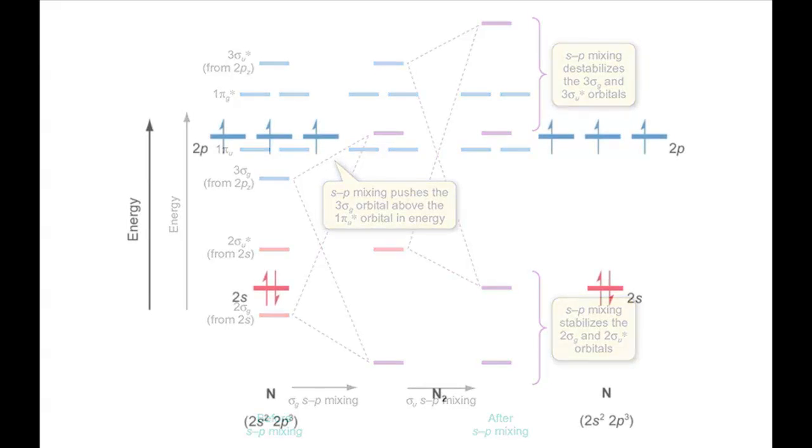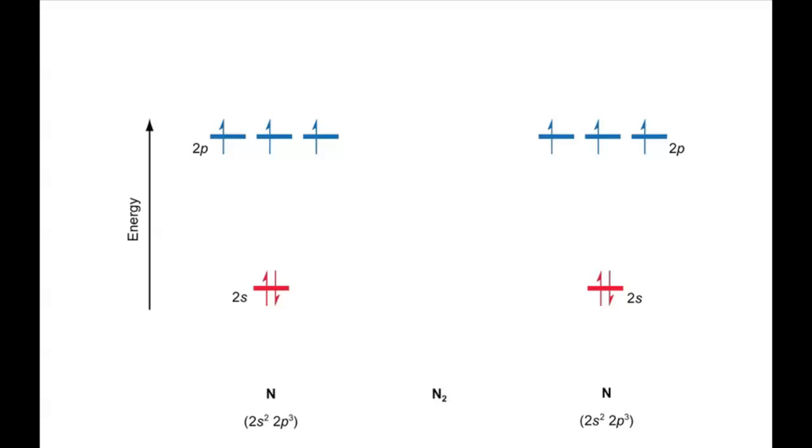In building the molecular orbital energy level diagram for N2, the interactions to form the pi orbitals are similar to those seen in oxygen, since these interactions are not affected by SP mixing. The pi orbitals are the wrong symmetry to interact with the S-based sigma orbitals.